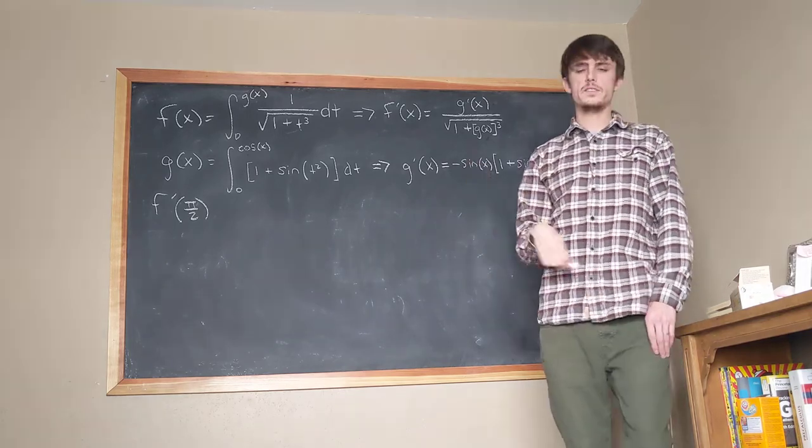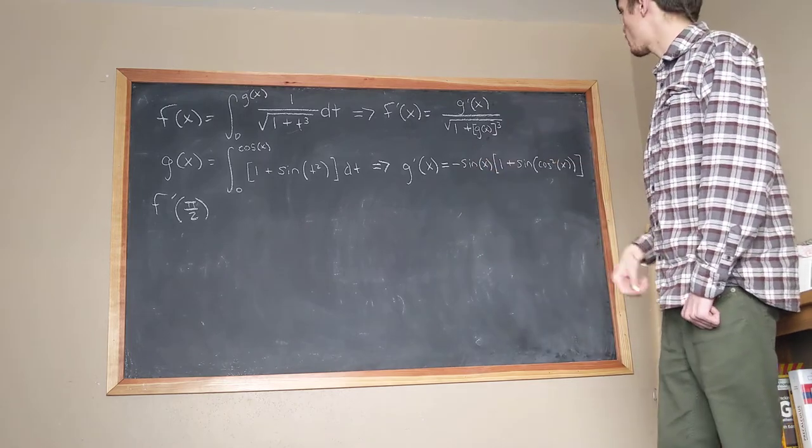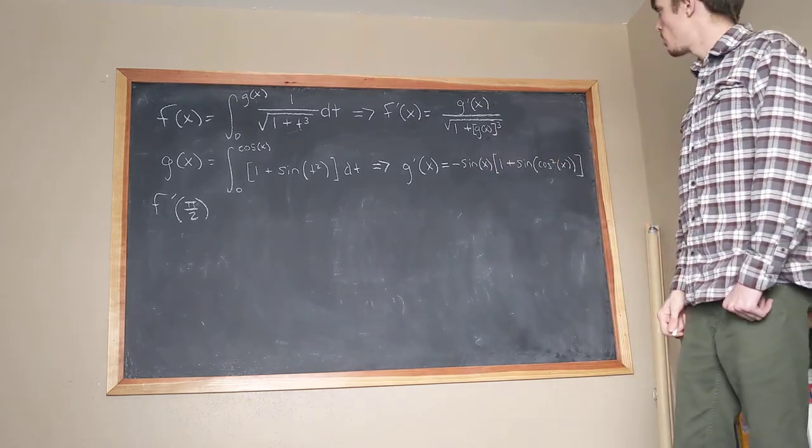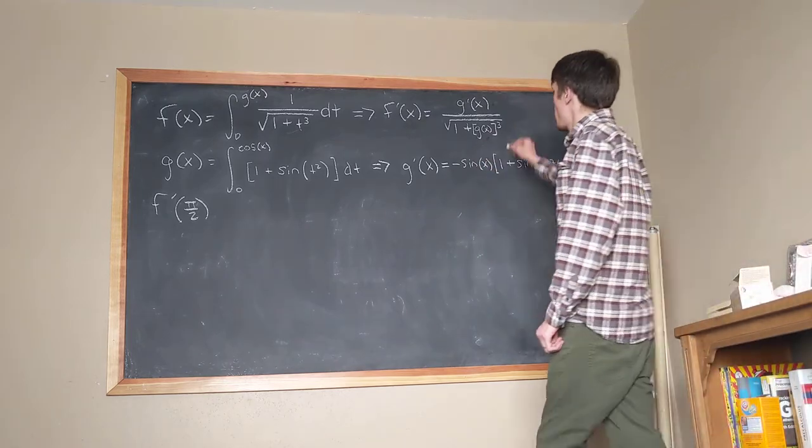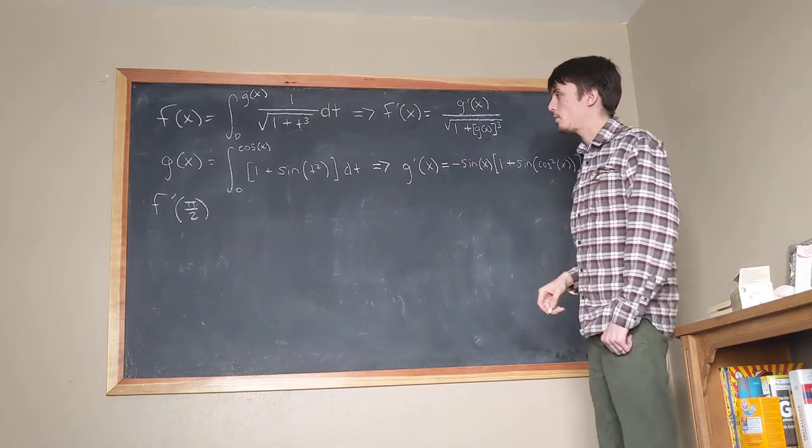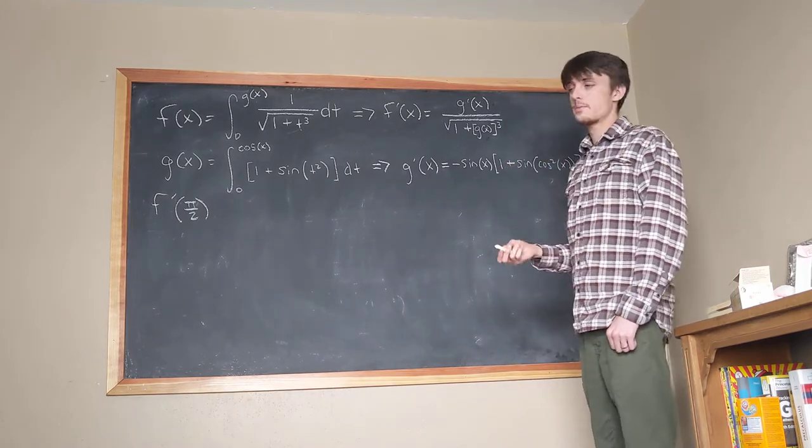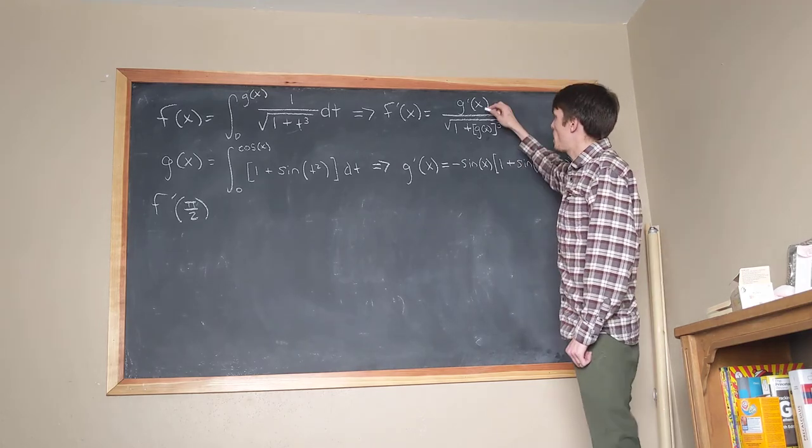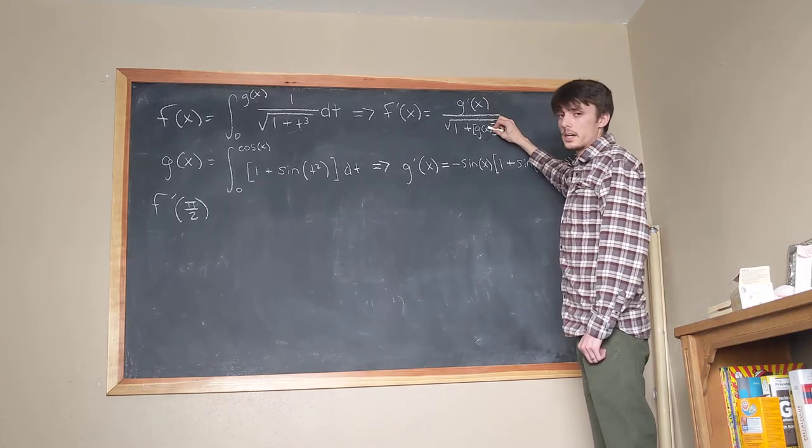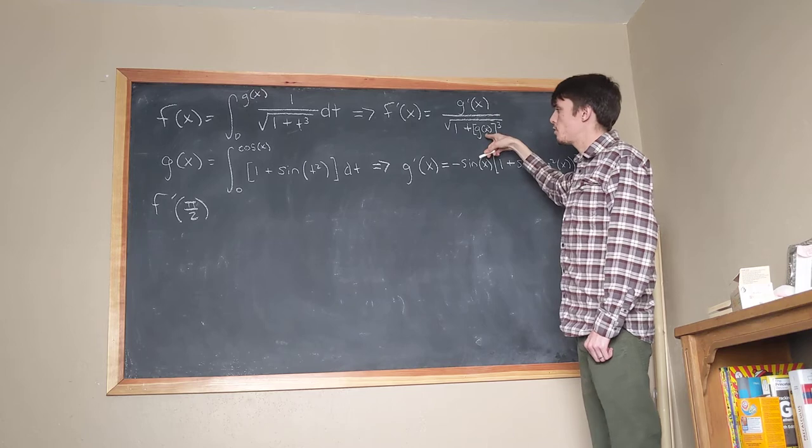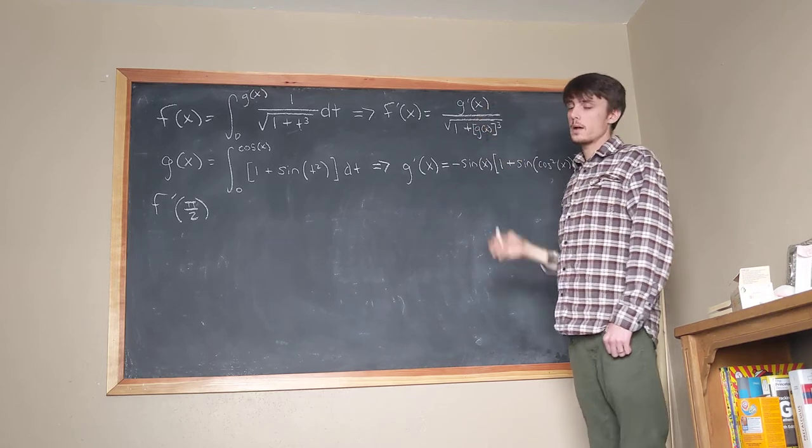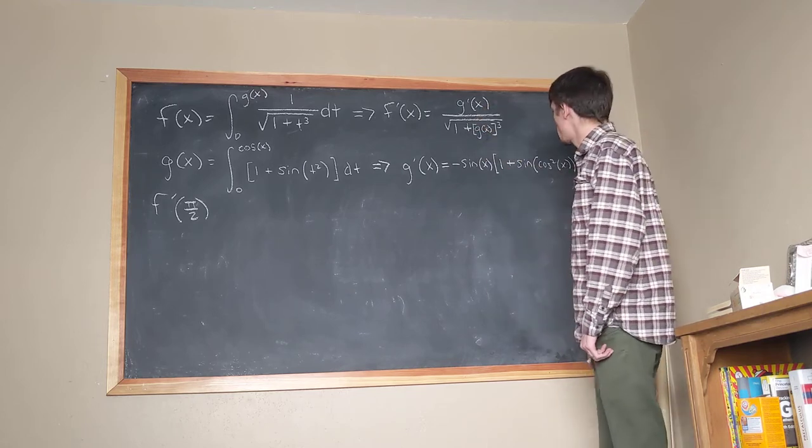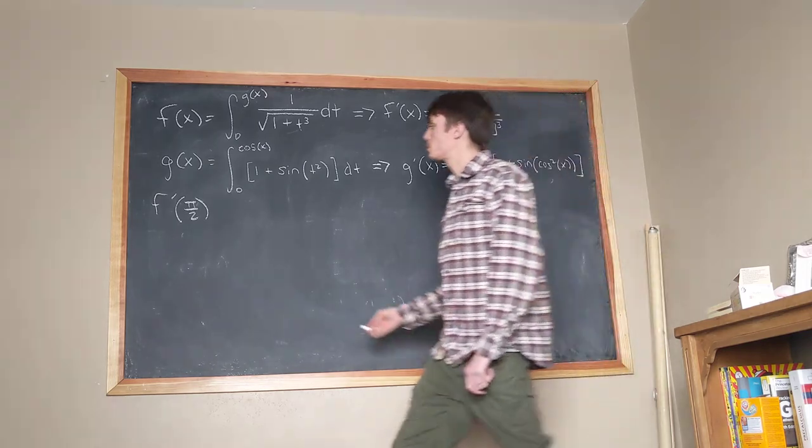Pluck that off. And minus 0 because of the bottom bound, but I'm not going to really worry about that. Okay, so that's our g prime of x. We have f of x, we have g prime of x, and then we need to calculate f prime of pi over 2. So in order to calculate f prime of pi over 2, we need to plug pi over 2 into here and into here, which means that we need to know what g of pi over 2 is and what g prime of pi over 2 is, which is actually not that bad to find out. So let's do that.